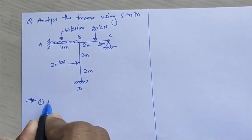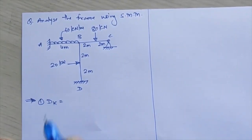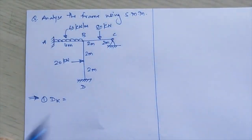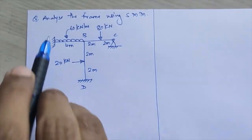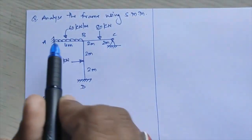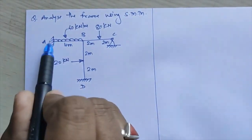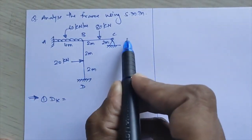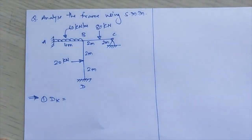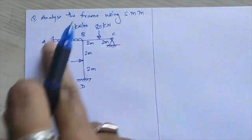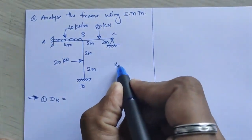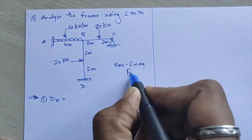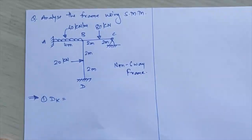First step: we will calculate the kinematic indeterminacy of your frame. The classification of this frame — it will be a non-sway frame, because the lateral load reactions from HA and HD will be restricted by the horizontal reaction HC. So this frame will be classified as a non-sway frame.